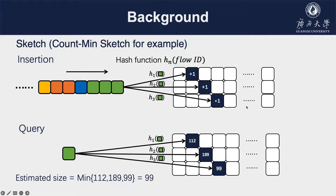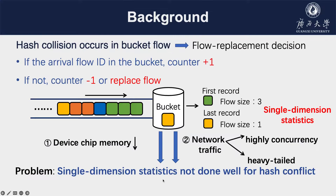We will show the most classical sketch, Count-Min Sketch (CMSketch). Suppose packets are hashed into CMSketch by three hash functions. CMSketch uses the flow ID as a key to hash into each bucket, and the counter of the bucket will add one. After insertion, we check the buckets that the flow hashes into and regard the minimum counter in the buckets as the flow size. In this example, the flow size of flow green is 99. The current sketch uses one cell to record the estimated heavy flow ID and one counter to record the packet count, which is the estimated heavy flow size.